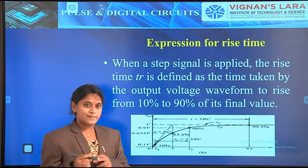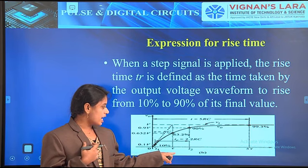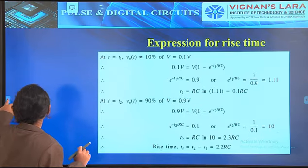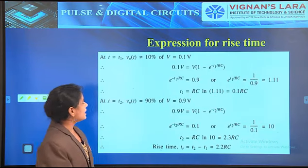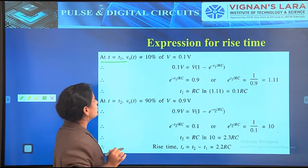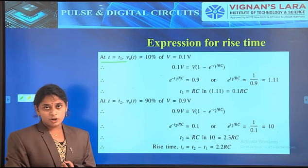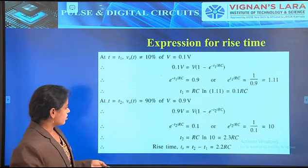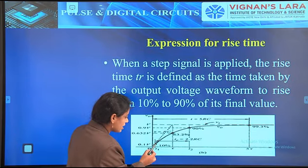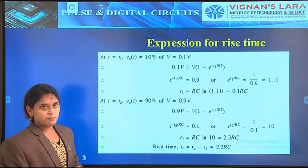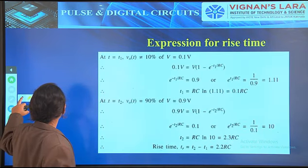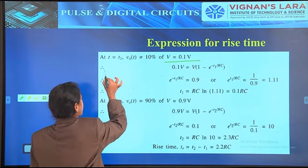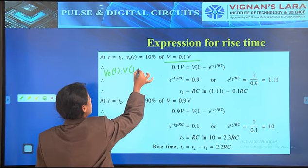As we know, we have to substitute different values — at T equal to T1 and at T equal to T2 — to get the TR condition. First, at T equal to T1, what is V0 of T? The output voltage is at 10 percent level. So V0 of T becomes 0.1V, and substituting into V into 1 minus e power minus T by RC, we get e power minus T by RC equals 0.1.